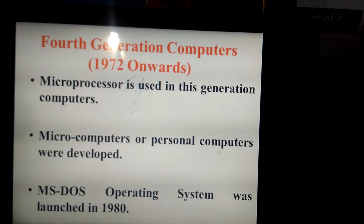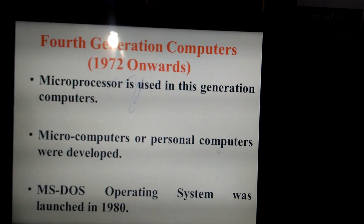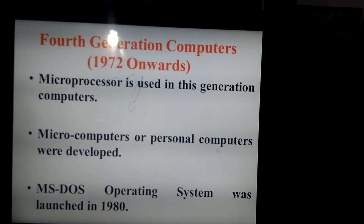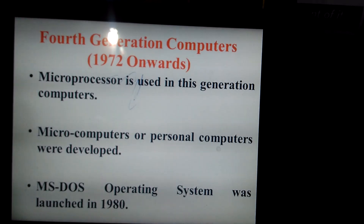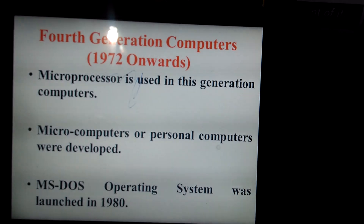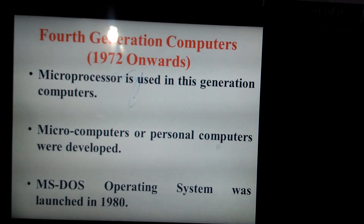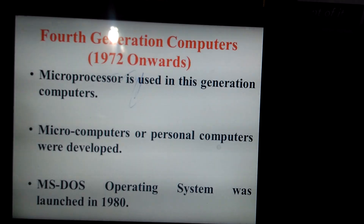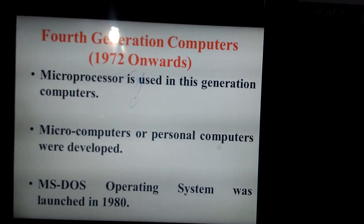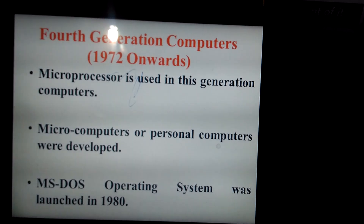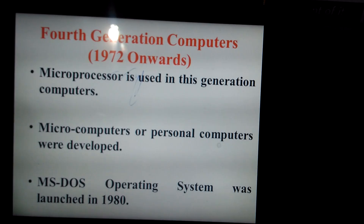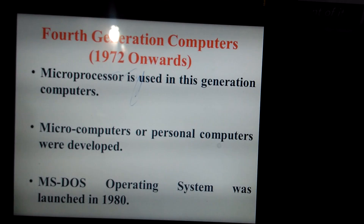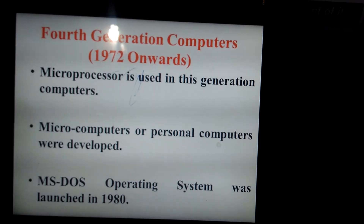Moving to the fourth generation of computers — the time period is 1972 onwards, sometimes listed as 1972 to 1980. Time periods can vary, so don't worry too much about that. The microprocessor was used in this generation, which was even smaller than a chip.